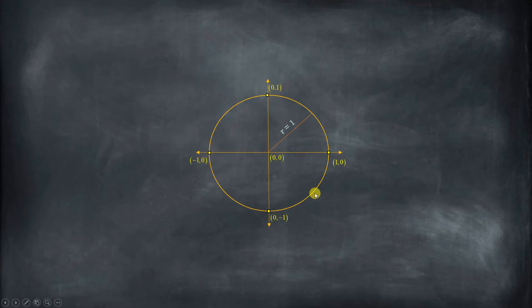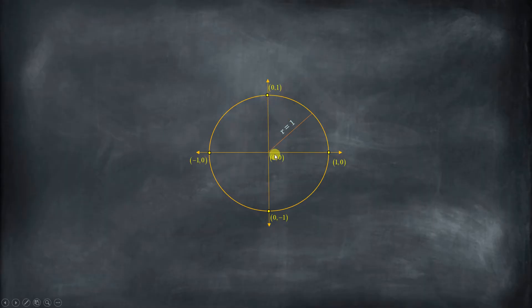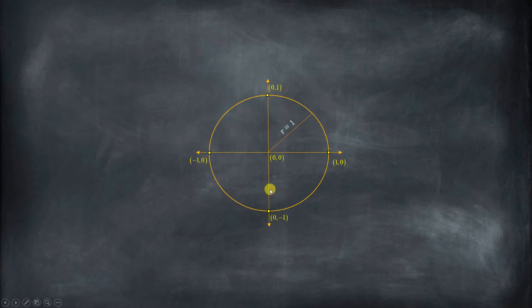If we have a radius of 1, that means anywhere on the edge of the circle the distance from the origin is 1, because a circle is an infinite collection of points all equal distance from one center point. Right here, the vertical distance is 0 but the horizontal distance is 1. Here, the coordinate is (0, 1) because the vertical distance is 1 but the horizontal distance is 0. And so that's how we get all of these coordinates: negative 1, 0 on the left, and 0, negative 1 at the bottom.